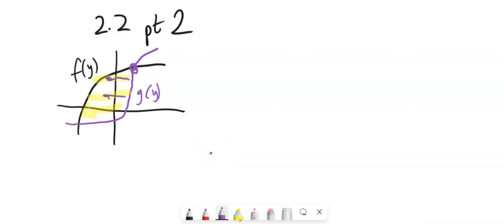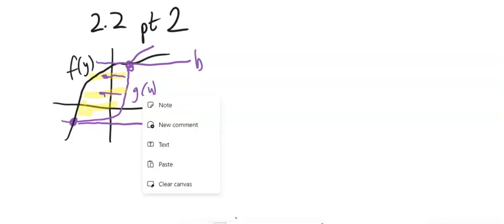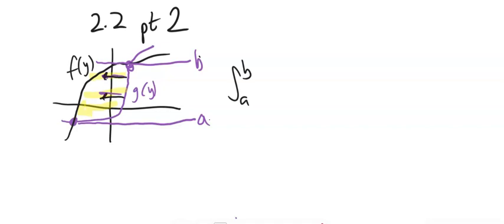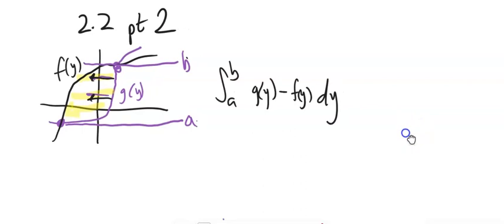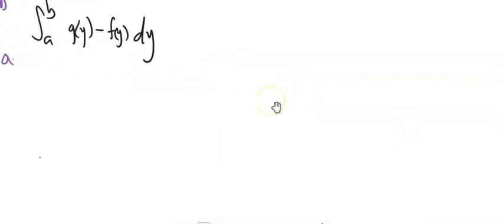Notice what I'm doing then is I'm looking at this would be my a value, and this height here would be my b value. This height then here would be my b value. So I would say something like integral from a to b. And now notice I'm looking towards the y axis, so I would have g of y minus f of y, and my derivative would be relative to y. So let me give you an example.